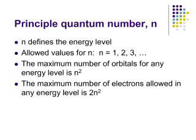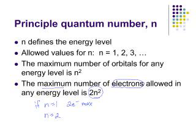The other thing you need to know about the principal quantum number is that the value of n allows us to calculate the maximum number of electrons in that energy level, and that's equal to 2n². We have other quantum numbers that tell us we can have a maximum of two electrons in any orbital. So if n=1, the maximum number of electrons in that energy level is 2. In the second energy level, the maximum number is 8. If you are in the fifth energy level where n=5, you can have a maximum of 50 electrons in that energy level.